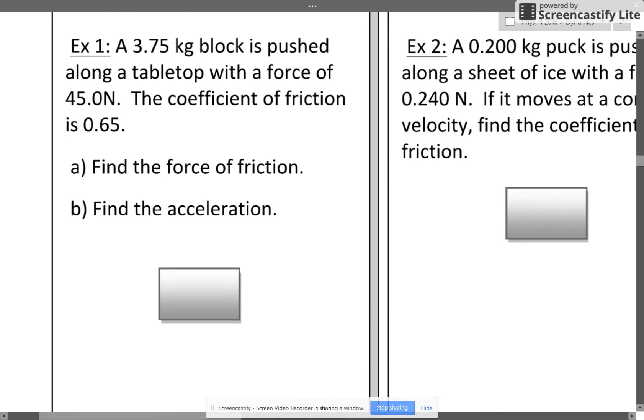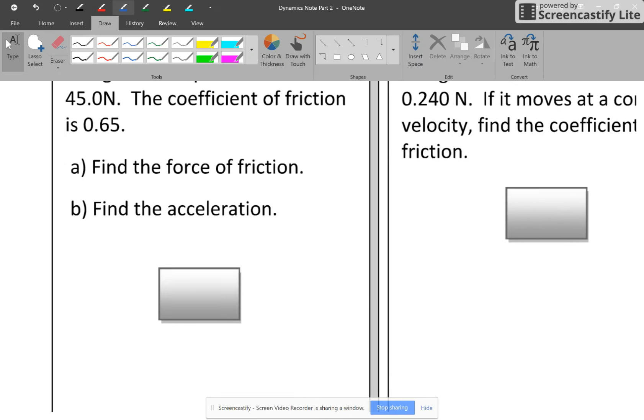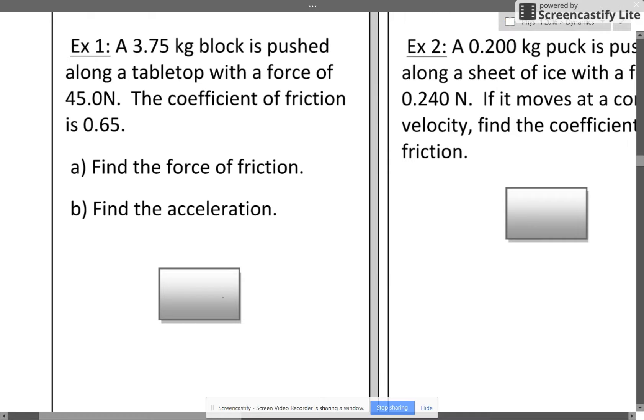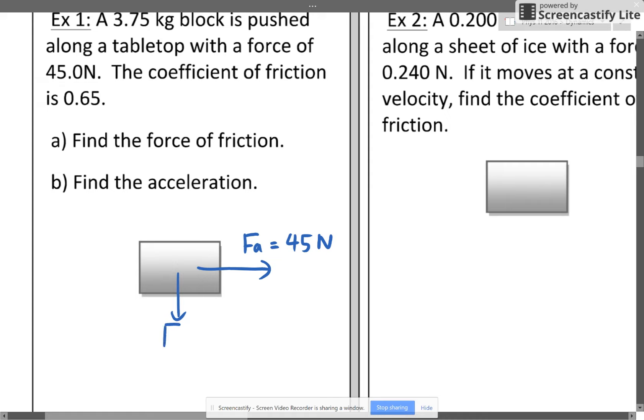Example 1: A 3.75 kg block is pushed along a tabletop with a force of 45.0N. The coefficient of friction is 0.65. Find the force of friction and the acceleration. So you're trying to push it with a force of 45 newton. The box is 3.75 kilogram, which means we can find out what the force of gravity is. Remember, force of gravity is mg. So if we have the mass which is 3.75, we can find out what the force of gravity is, which is 3.75 kg multiplied by the acceleration due to gravity on earth, which is 36.75 newton.